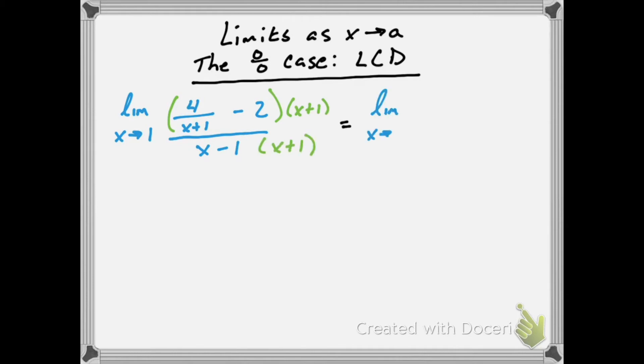In the top, this will reduce to 4 minus 2 times x plus 1, and in the bottom, we'll just leave it as x minus 1 times x plus 1.